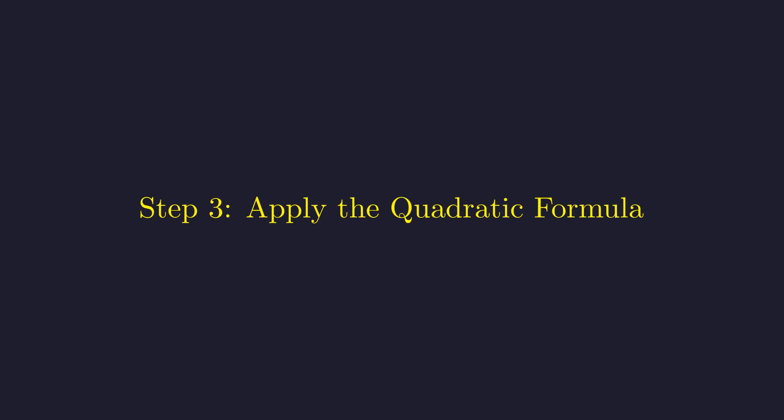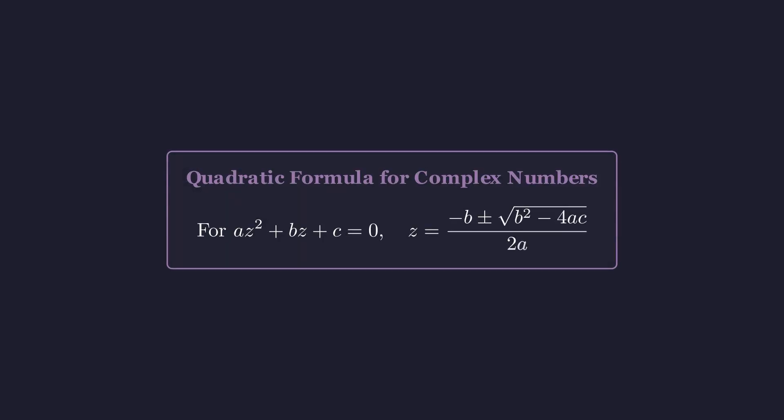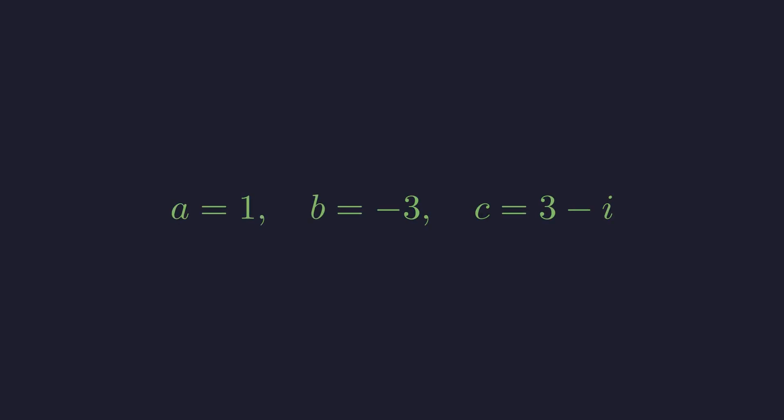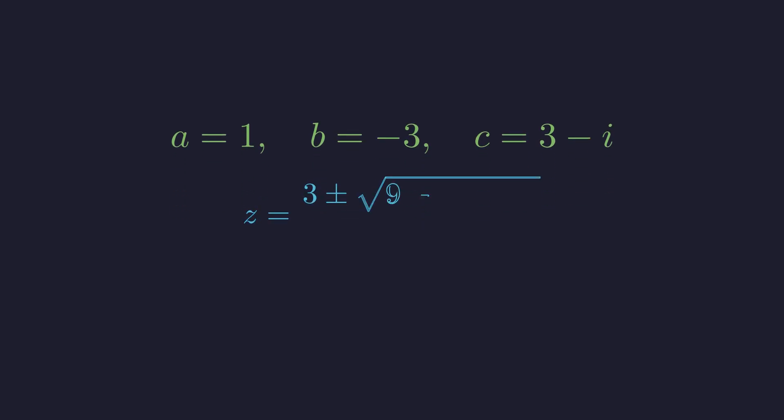Now we use the quadratic formula to solve for z. The quadratic formula works for complex numbers just as it does for real numbers: for az squared plus bz plus c equals zero, z equals negative b plus or minus the square root of b squared minus 4ac, all divided by 2a. In our equation, a equals 1, b equals negative 3, and c equals 3 minus i. Applying the formula gives z equals 3 plus or minus the square root of 9 minus 4 times the quantity 3 minus i, all divided by 2.